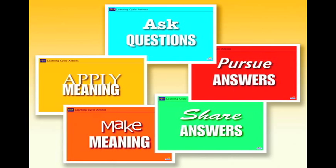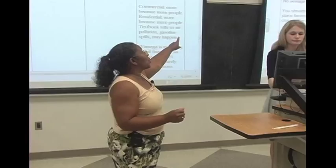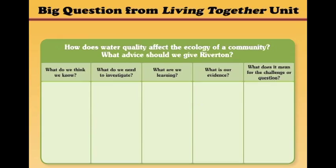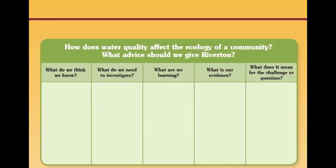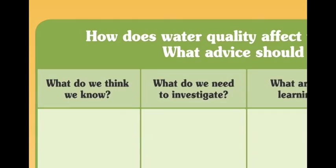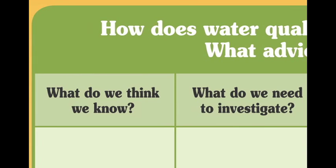Pull out your lab book and we're going to update your project board. The project board is one of those tools. The class creates a project board at the beginning of each unit and continuously adds to its five columns over the course of the unit. Creating and updating the project board is a repeated social practice in PBIS. The project board becomes an important class artifact. It is used to record the progress of the students as they move through the unit.